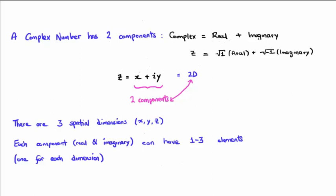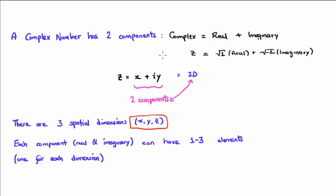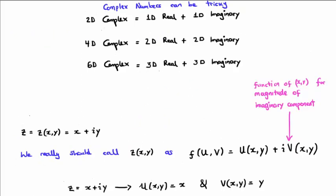The thing is, though, that essentially we are using up the placeholders that we use for the real numbers just to represent a single complex number. And that basically means that when we start transitioning to have three real dimensions, we're going to run out of placeholders. So, complex numbers can be rather tricky.